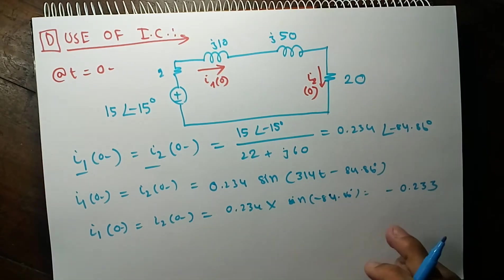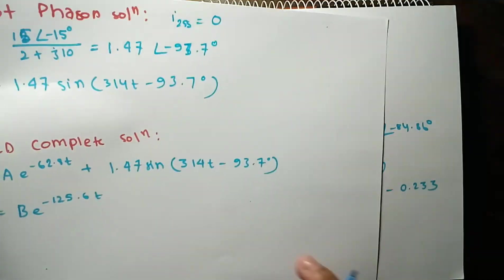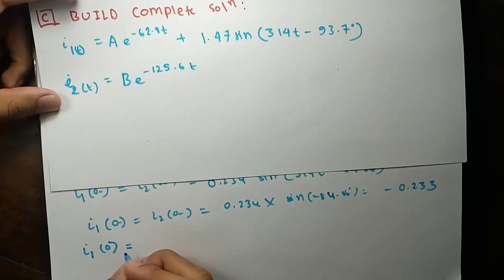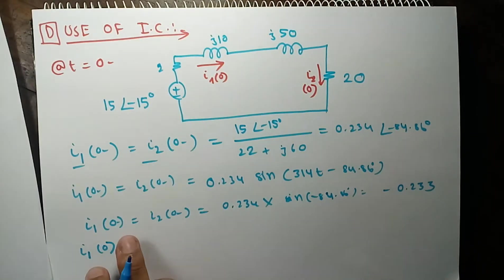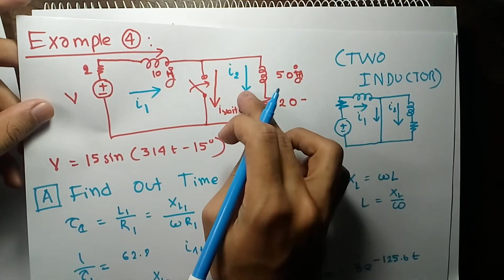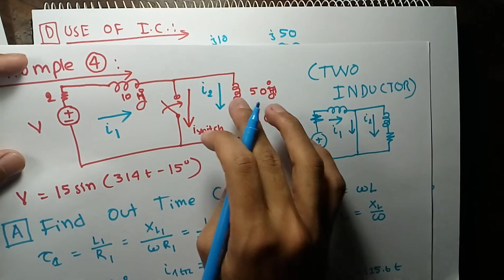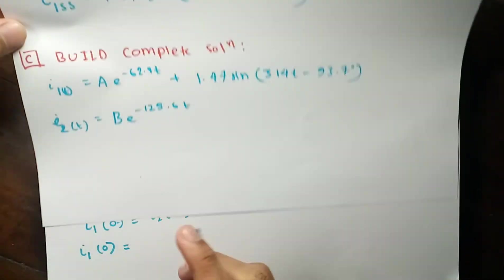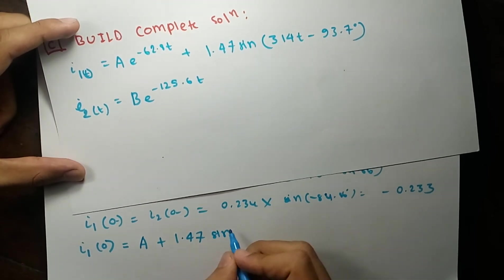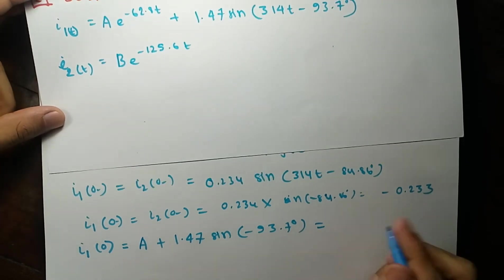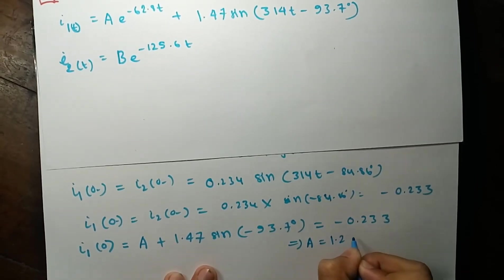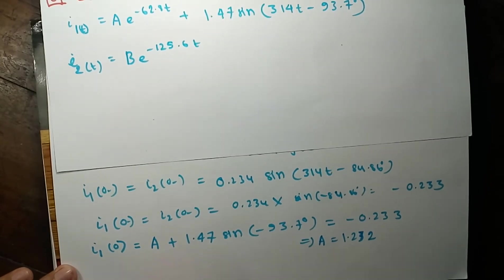We have found the values of I1 and I2 at T = 0. Since the current through an inductor cannot change abruptly, the current even after switching will be the same. So I1(0) = A + 1.47·sin(−93.7°) = −0.233, which gives A = 1.232. And I2(0) = B = −0.233.